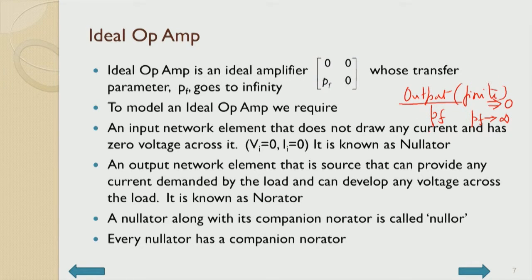An input network element must be defined that does not draw any current, because II is zero, and has zero voltage across it. The element that evolves from this definition — because of PF tending to infinity for finite output — is called a nullator. So VI equal to zero means short circuit, II equal to zero means open circuit: both conditions hold simultaneously.